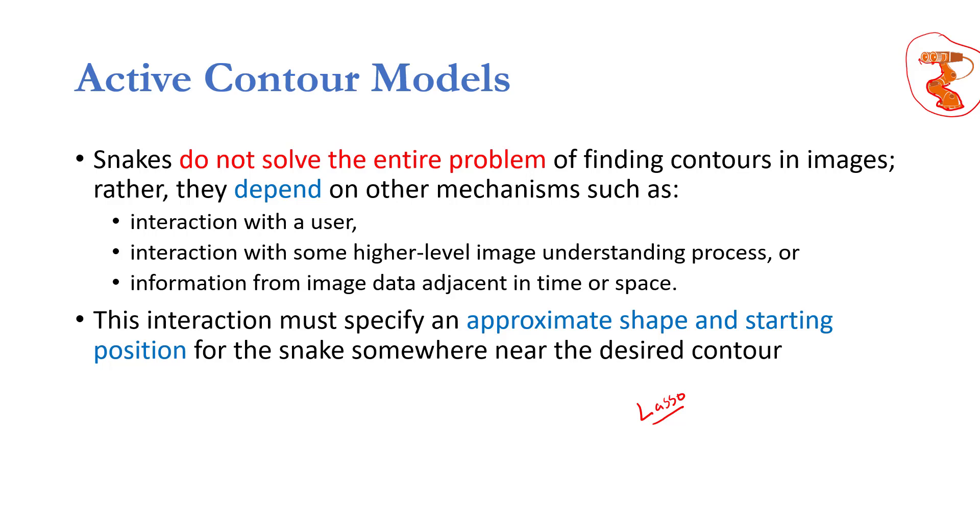And the lasso tool will automatically generate a snake or an active contour model and it will move that model around this periphery, around this edge, and it will create a selection path like this so that you can easily select this robot. Otherwise it won't be possible to select this robot as a whole because it has a complex shape. So what a magnetic lasso or a lasso tool will do is it will require some instruction from the user to get some information about the image or the areas where the energy of the snake can be minimized.